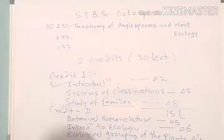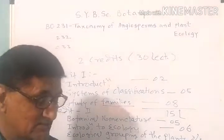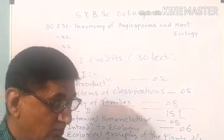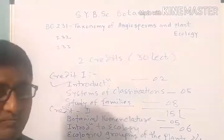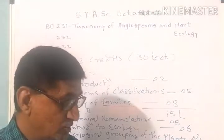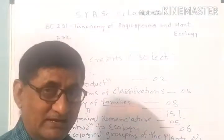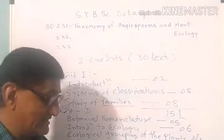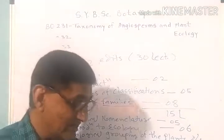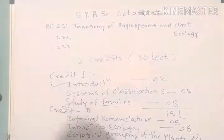This covers Credit 1. In Credit 2, under Botanical Nomenclature, you have to understand the concept of botanical nomenclature and its history, the binomial nomenclature system of angiosperm identification, and the International Code of Botanical Nomenclature — that is, the ICBN — and what is described within it.